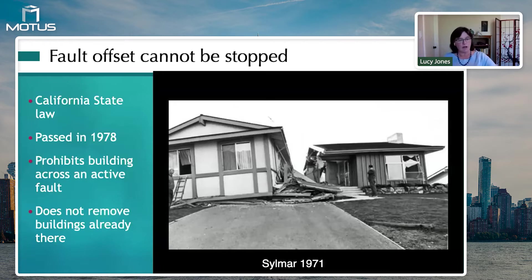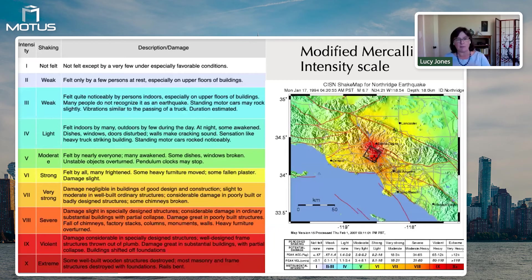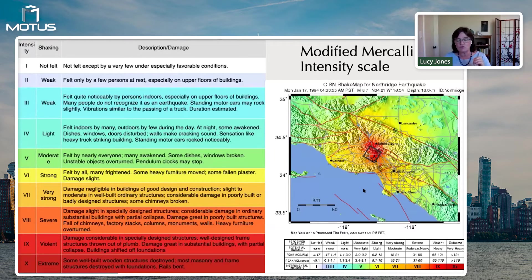The same thing is going on with the fault — the fault moves and waves travel out from there. We measure that movement with what is called the Modified Mercalli Intensity Scale. This is not magnitude; this is a subjective description of the amount of damage that you receive. It goes from 'not felt' at intensity one up through various levels of impact.